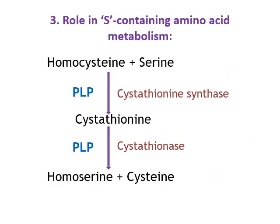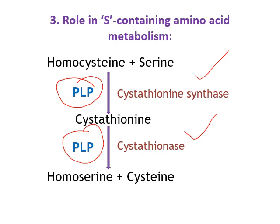The third function of pyridoxal phosphate is its role in sulfur-containing amino acid metabolism, specifically in transmethylation and transsulfuration reactions. Homocysteine condenses with serine to form cystathionine in a transsulfuration reaction, catalyzed by cystathionine synthase enzyme, which requires pyridoxal phosphate as coenzyme. Cystathionine is then cleaved into homocysteine and cysteine by cystathionase enzyme, which also requires pyridoxal phosphate as coenzyme.